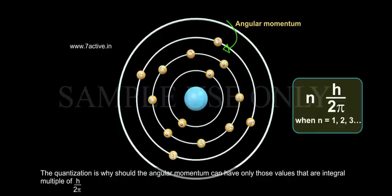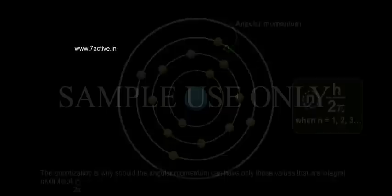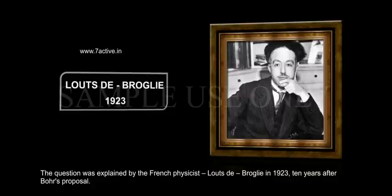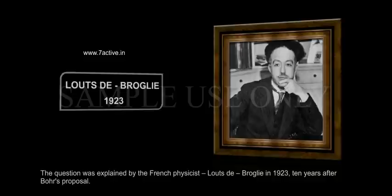The quantization is why should the angular momentum can have only those values that are integral multiple of h by 2π. This question was explained by the French physicist Louis de Broglie in 1923, ten years after Bohr's proposal.